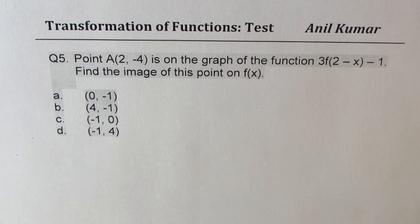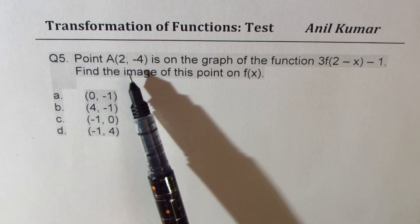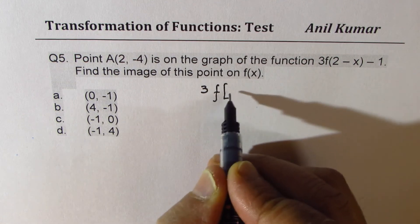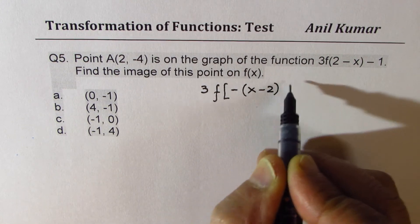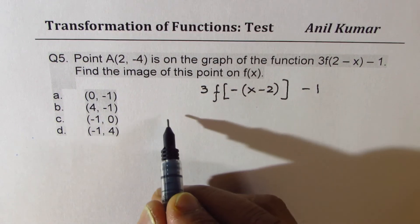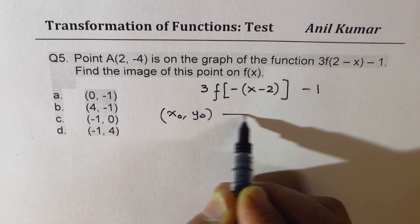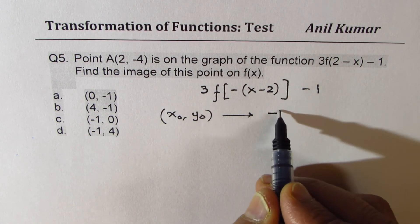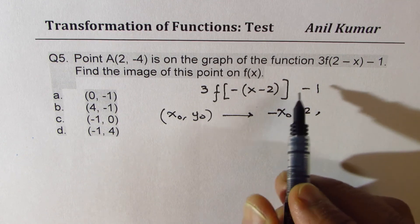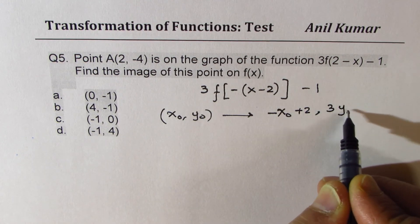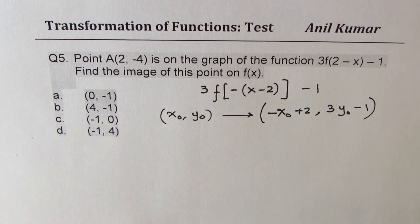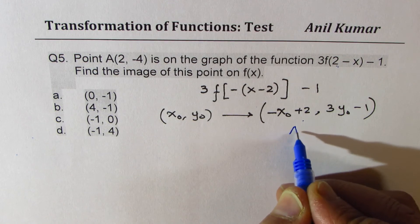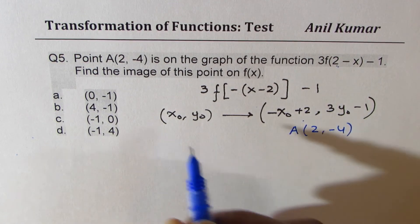Now let's see the last question here, which is point A 2 minus 4 is on the graph of this function. So first part is rewrite the function. So it is 3, f. Again, minus is common. So we get x minus 2. And minus 1. So in this case, the coordinates which are like x0, y0 on the original will move to x values will become negative and then you have to add 2. So negative x0 plus 2. As far as the y values are concerned, they get multiplied by 3 and then you take away 1. What we are given here is a point 2 minus 4 is on the graph of that transform function. So A is here. We need to find these points.